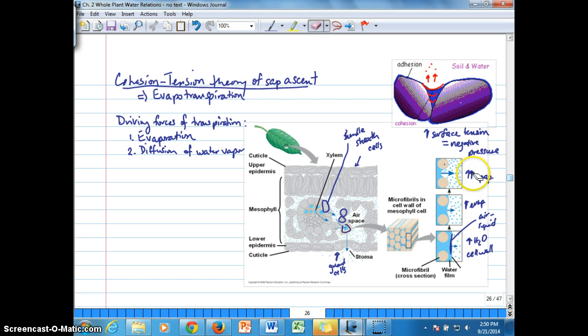As evaporation continues, the radius of the meniscus between these cellulose microfibers becomes smaller and smaller. So this is where we have the highest tension. As evaporation continues, surface tension becomes higher, and that's going to create the highest tension in general. This is low tension down here.